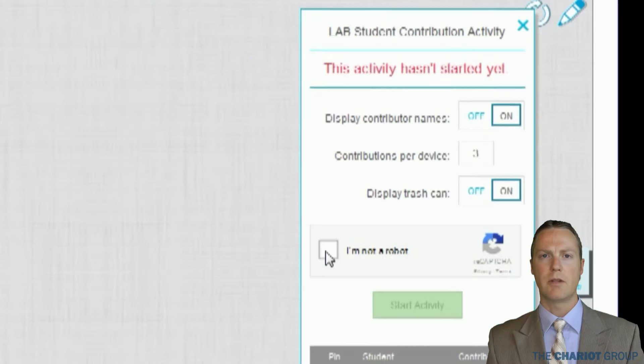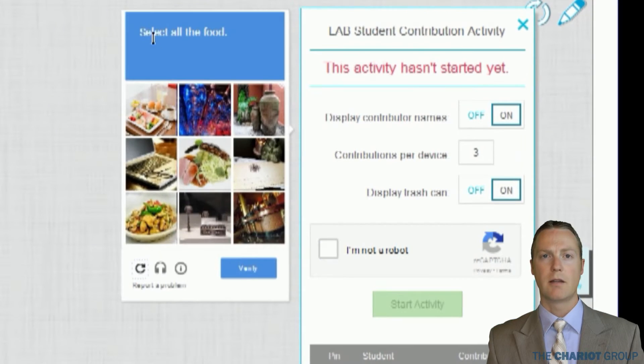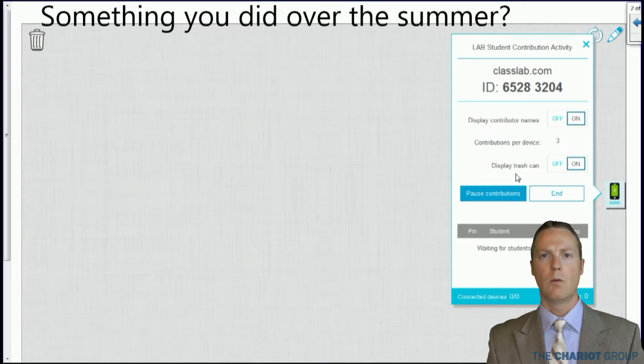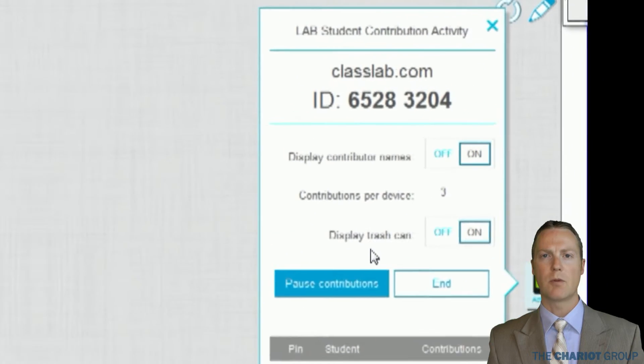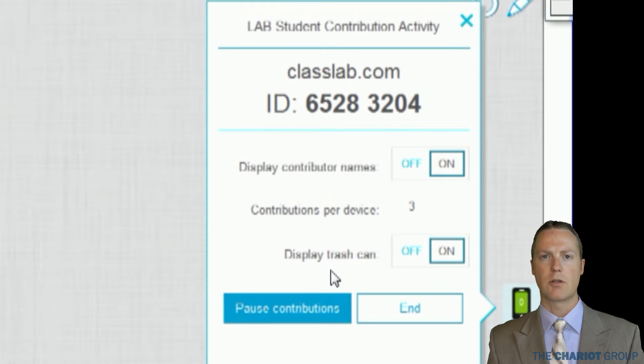The first time this is done, you will need to prove that you are not a robot by answering a question. This will only need to be done once. Once the activity is started, at the top it will tell the students the web address to go to, classlab.com, and the activity number.